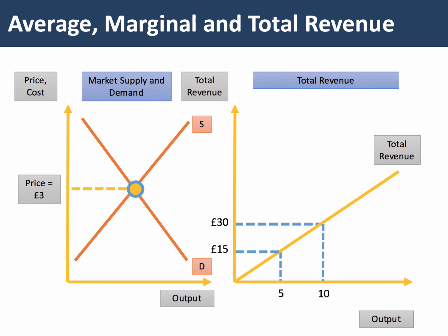If we double our sales to 10, the total revenue doubles to 30. And if we increase our output to 15, the total revenue rises to 45. Total revenue will be a linear function of the price prevailing in the market.